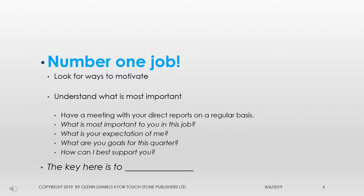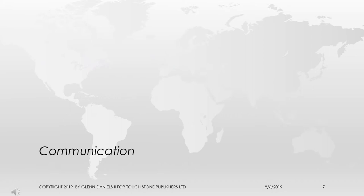The key here is Habit Number Five from Stephen Covey's Seven Habits of Highly Effective People: seek first to understand, then to be understood. By understanding your direct reports and their needs, you will find the key to developing each member of your team.